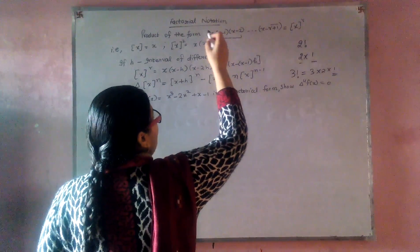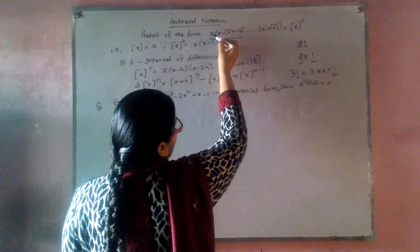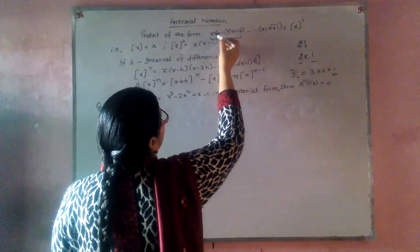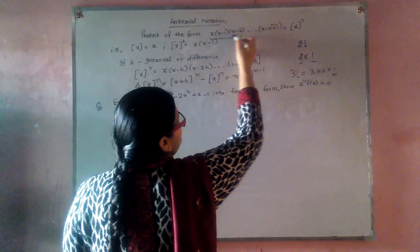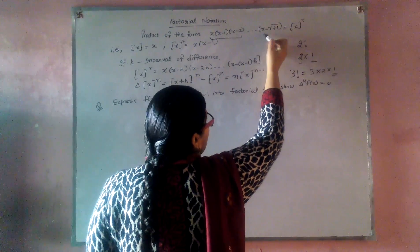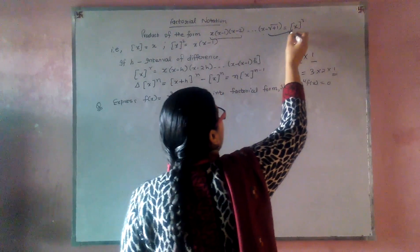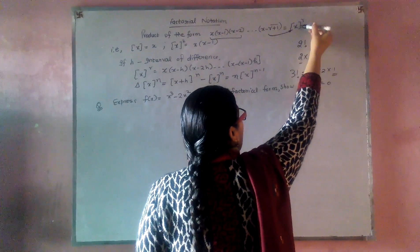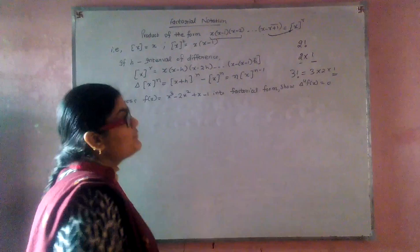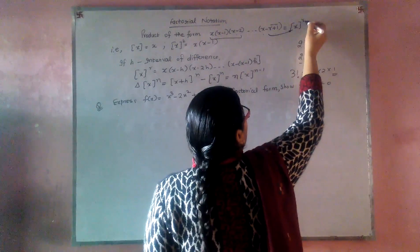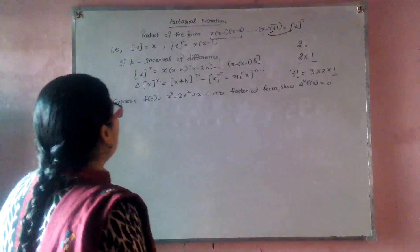If we are talking about Newton's forward difference operator, let us suppose the product of the form x, x minus 1, x minus 2 and so on, up to x minus r plus 1, then this is written in the form of factorial of x up to r, because it leads to r terms.